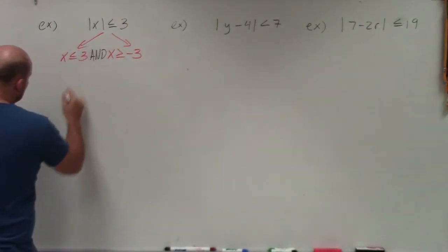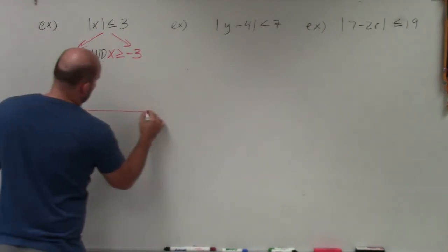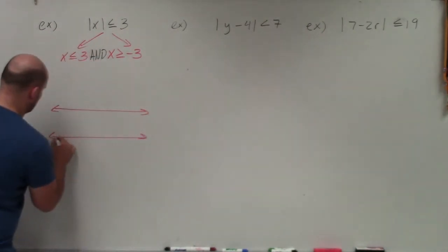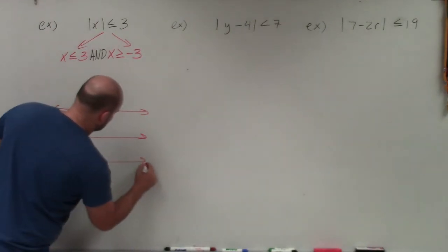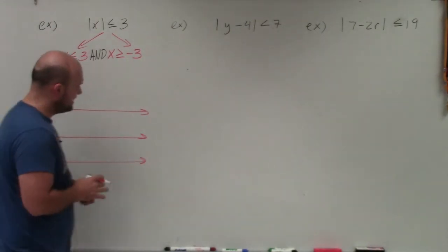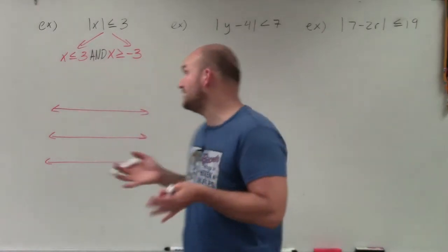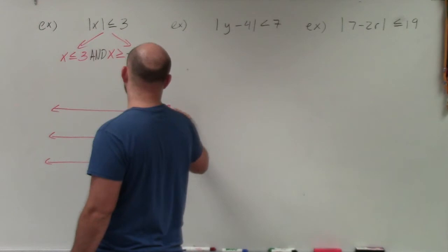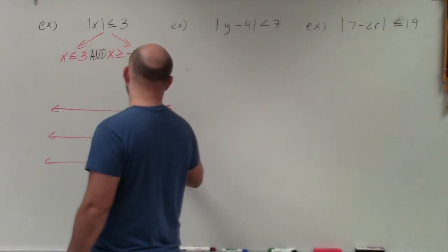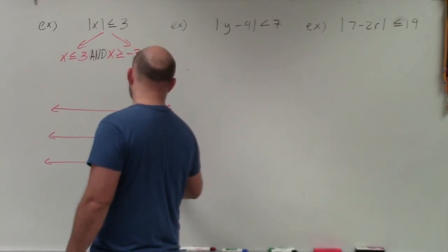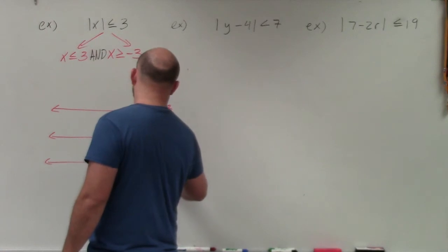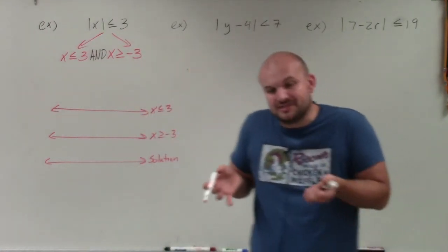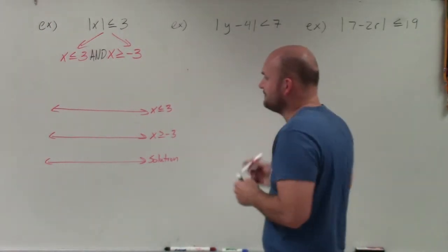Now when graphing, there are two different ways I like to show this. The way I like to do it when first explaining to students is by using three different inequalities. The first inequality I'm going to graph is x is less than or equal to 3, then I'm going to graph x is greater than or equal to negative 3, and then I'm going to graph the solution. Remember when dealing with 'and,' you're dealing with where they intersect.